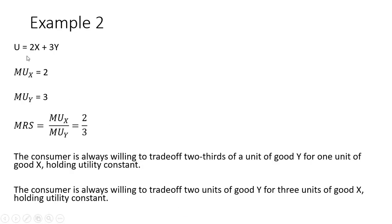Example two: utility equals 2x plus 3y — another example of perfect substitutes, where x and y enter the utility function in a linear manner. The marginal utility of good x is a, which is 2. The marginal utility of good y is b, which is 3. Forming the marginal rate of substitution, we get 2/3. As an interpretation, the consumer is always willing to trade off two-thirds of a unit of good y for one more unit of good x, holding utility constant. Or equivalently, the consumer is always willing to trade off two units of good y for three units of good x, holding utility constant.